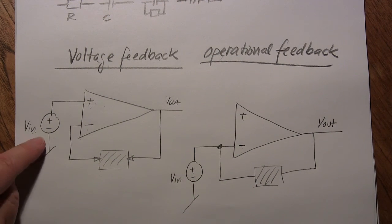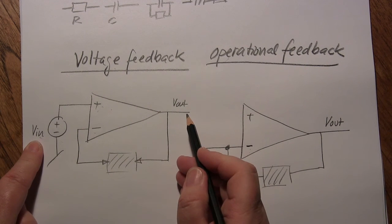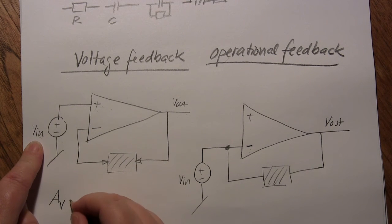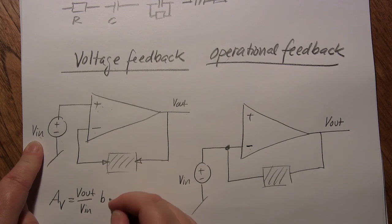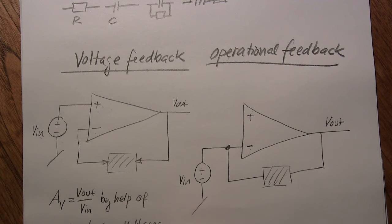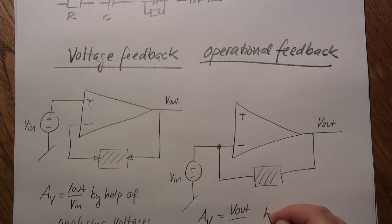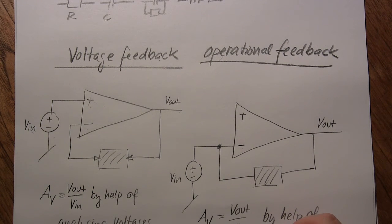Knowing which type of feedback we have is important for analysis. If we know we have voltage feedback, we can solve an equation for the voltage gain V-out over V-in by analyzing the circuit using voltages. We will see in the next video how we actually apply that on two circuits.